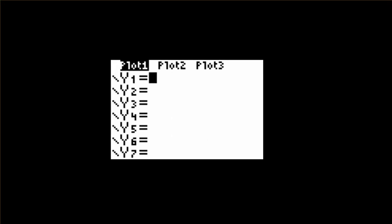The next thing we need to do is make sure that the plot is on so that we can see our data values. If you go to your Y equals button, scroll up, hit enter, scroll down. Plot 1 should be highlighted like this.